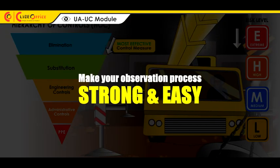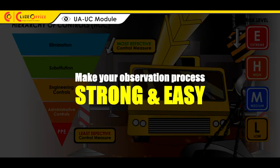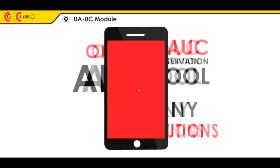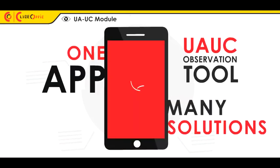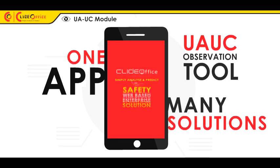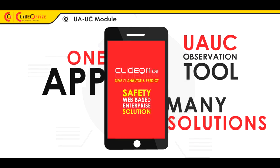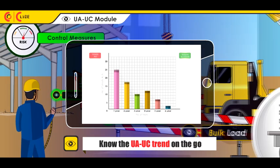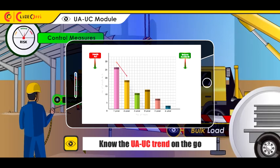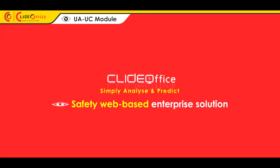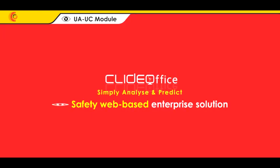Make your observation process strong and easy with the Clyde Office mobile app — simply analyze and predict. Know the unsafe act or condition trend on the go. Simply analyze and predict.